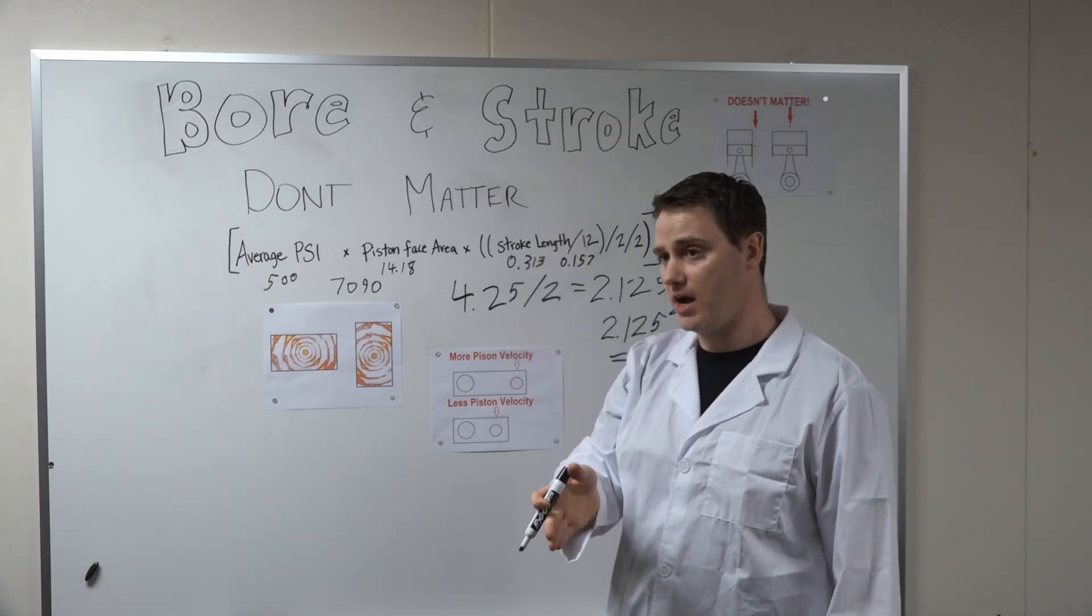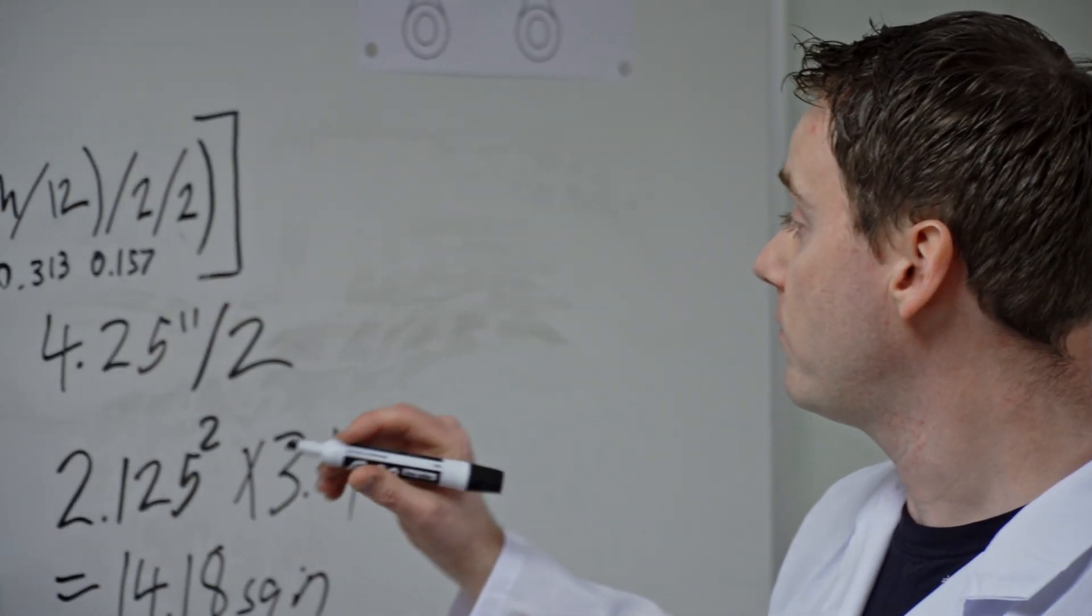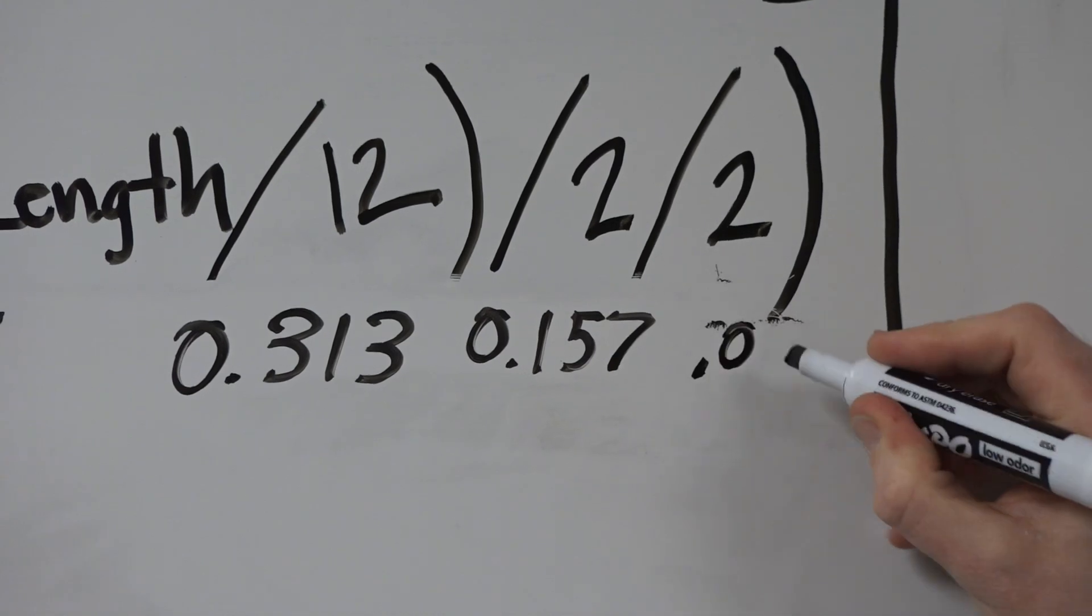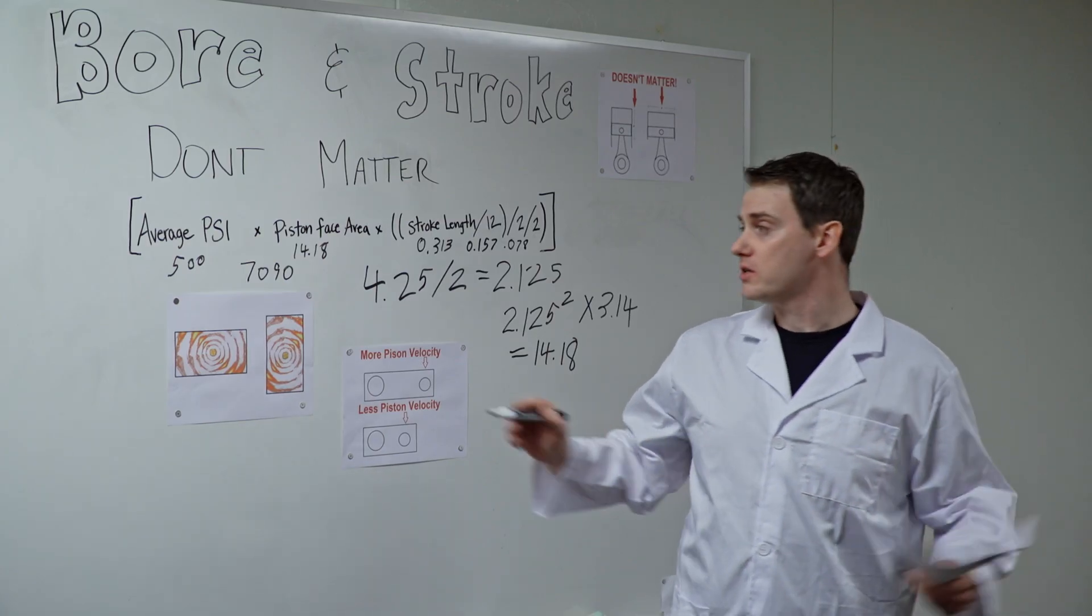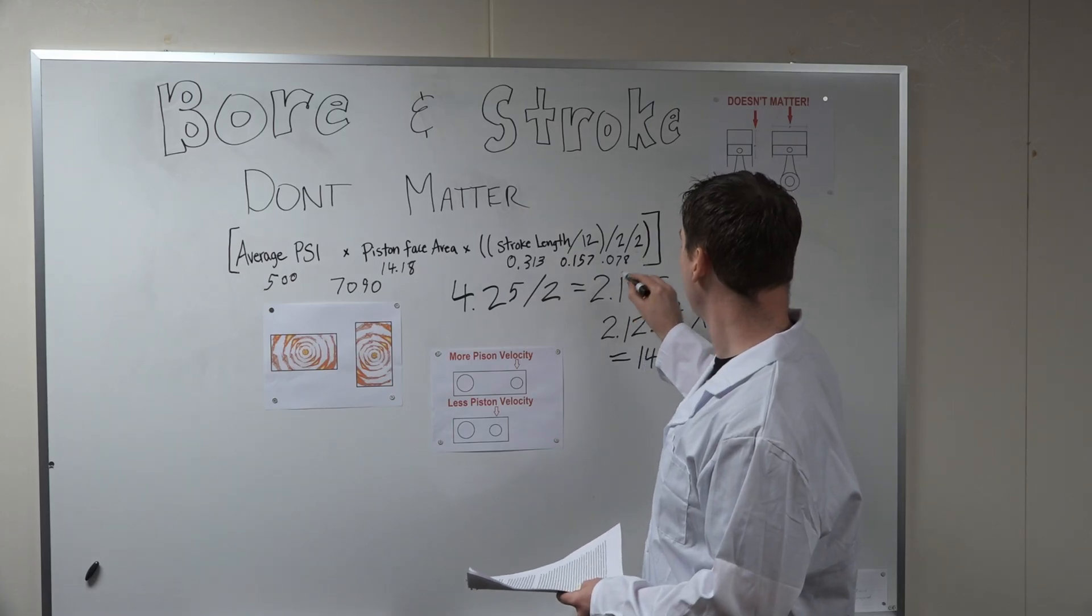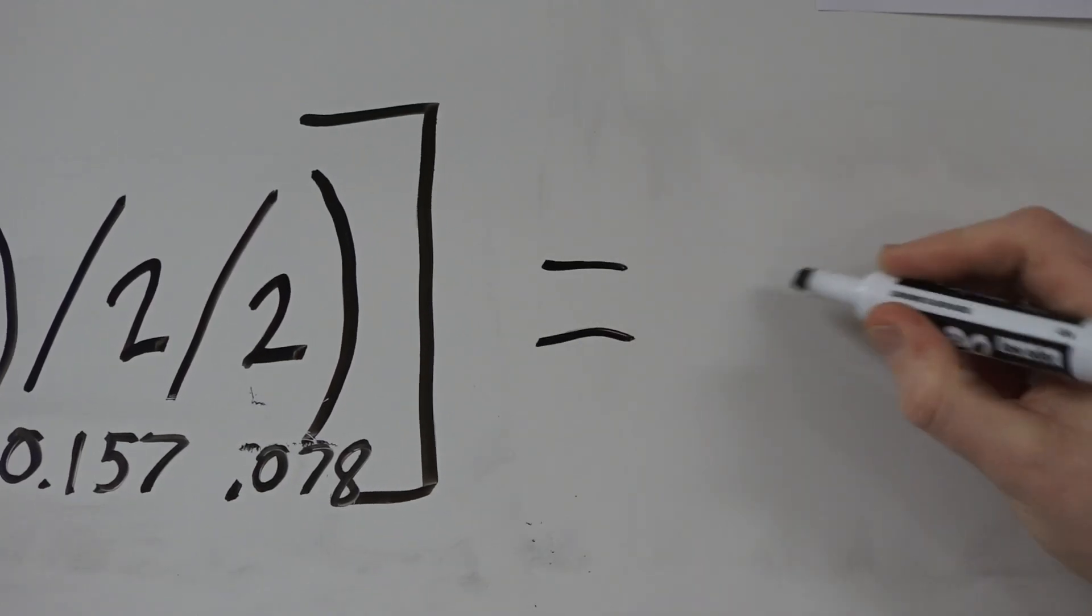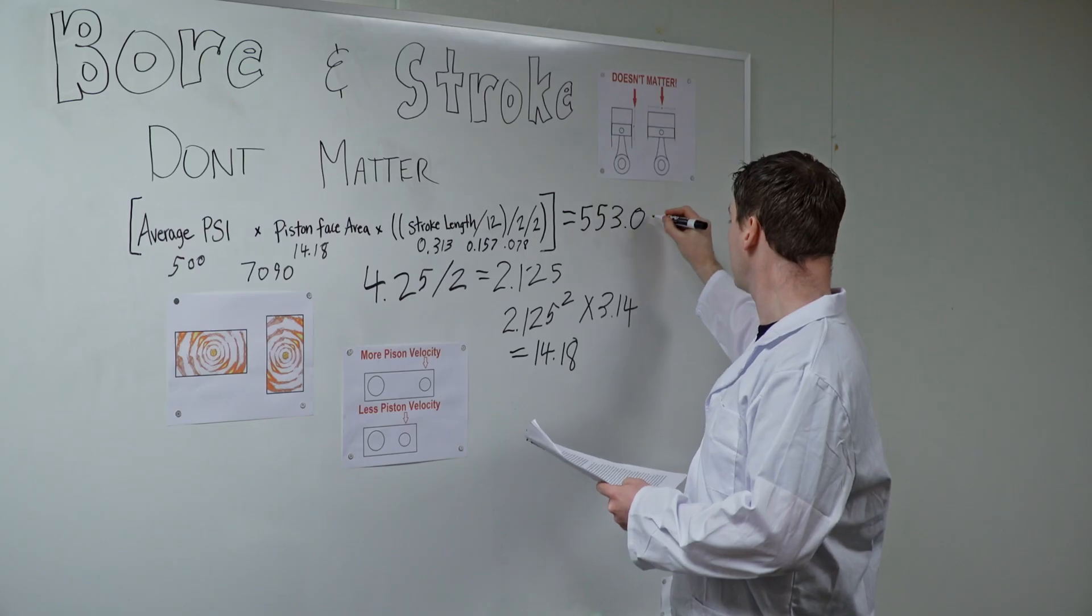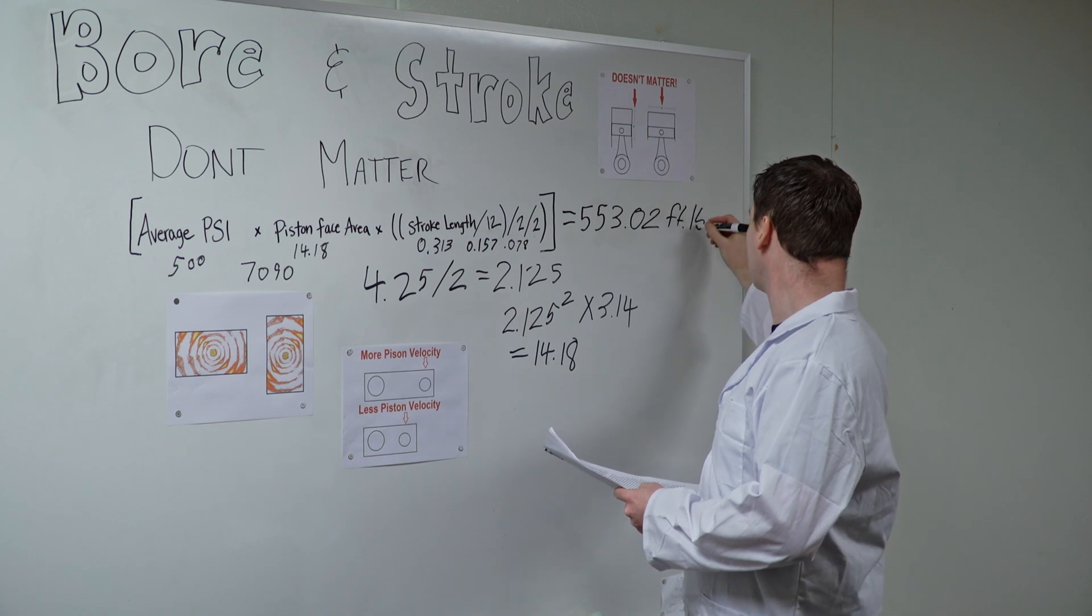We have to do that same thing with the stroke and average the amount that we have because the crank starts at 0 at the top and then ends at 0 at the bottom, essentially. So we divide this 0.157 by 2 again to get 0.078. So if we take 7,090 pounds of force multiply it by an effective stroke length of 0.078, that equals 553.02 foot pounds of torque.